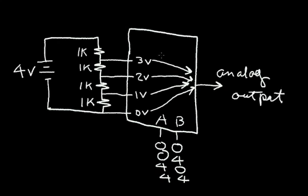In a future video we'll determine how to actually design that circuit, but in this video I just wanted to show the concept: you can take two inputs with four different conditions, tap off four different voltages, and send each one to an analog output. That is called a digital-to-analog converter.